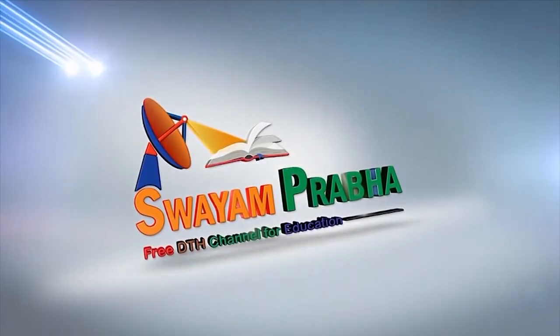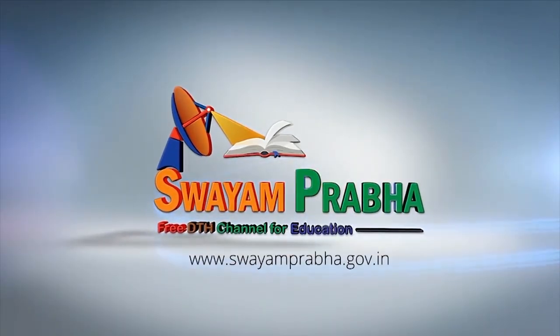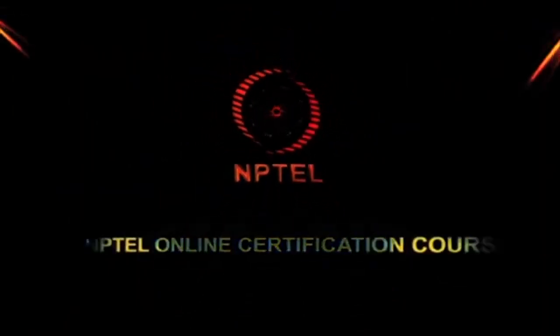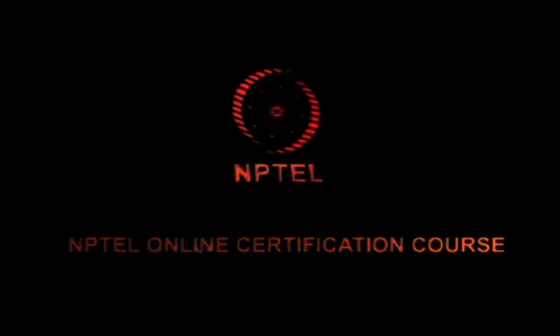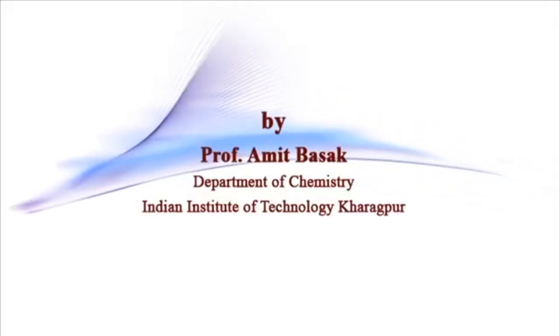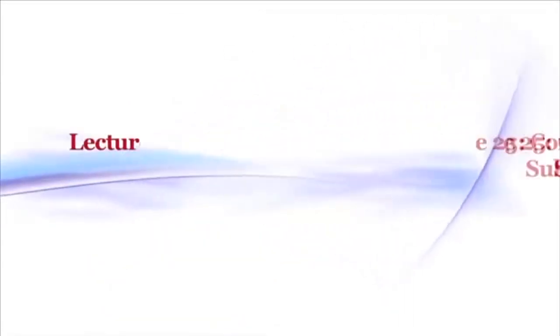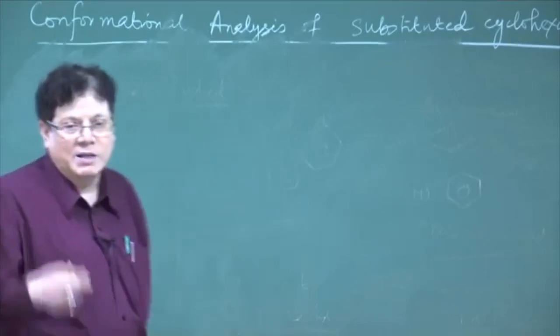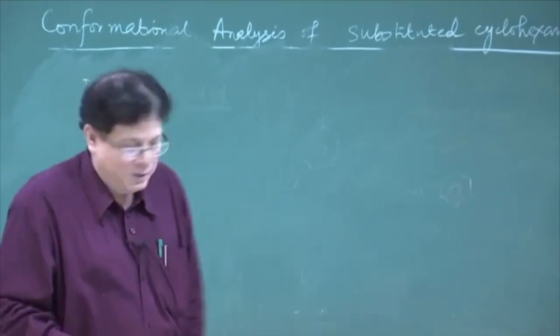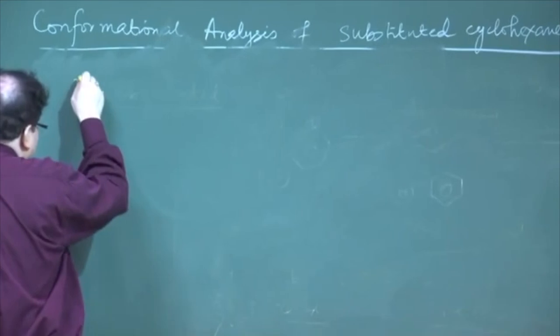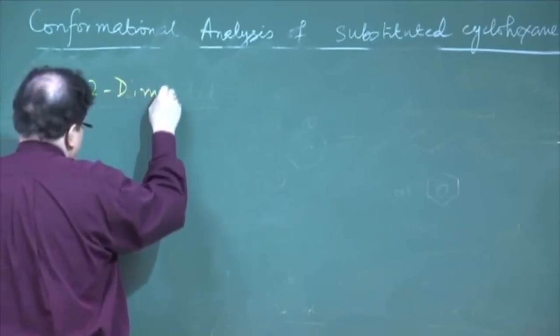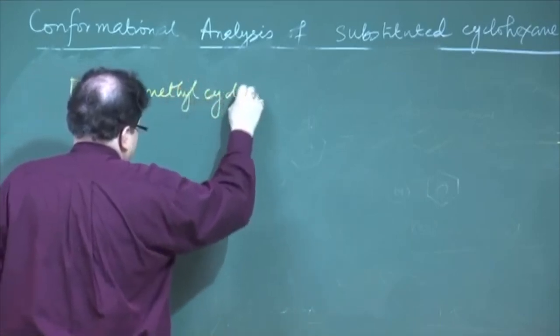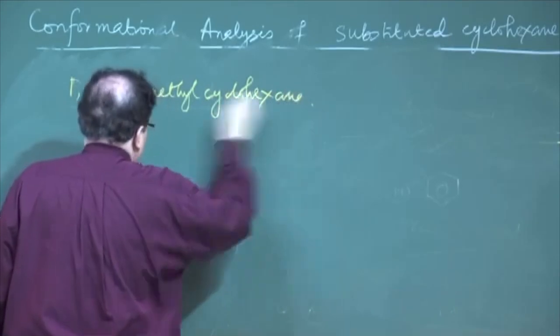Swayam Prabha. Digital India. Educated India. Now let us go to the cyclohexane — disubstituted cyclohexane — where the substituents are in the 1,2 relationship, and we will take the simplest case: 1,2-dimethylcyclohexane.